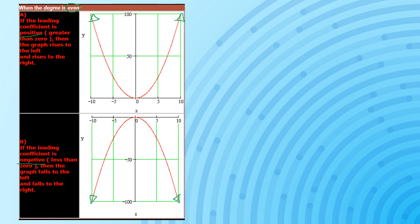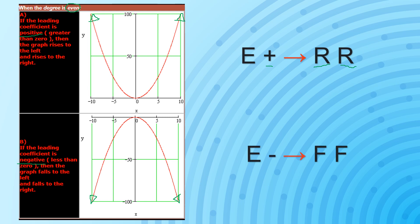So to make it simple, we have the notation: if an even degree is accompanied by a positive leading coefficient, it will behave by rising on the left side and also rising on the right side. If we do have an even degree accompanied by a negative coefficient, it will behave by falling on the left side and also falling on the right side. Notice that whenever the degree is even, the left side behavior is the same as the right side behavior in a graph of a polynomial function.